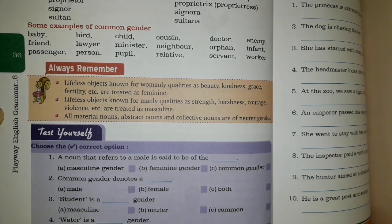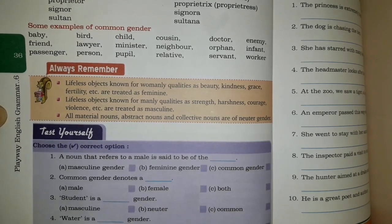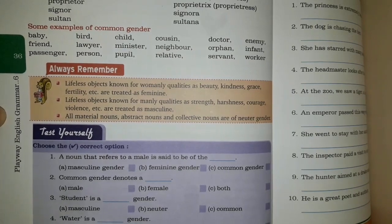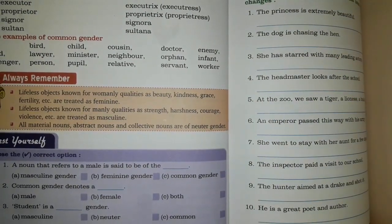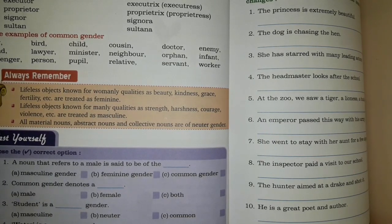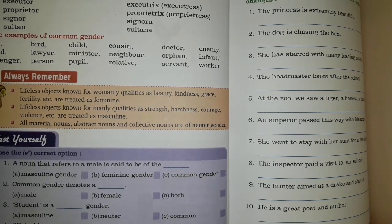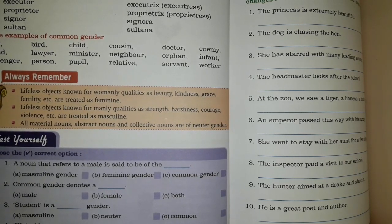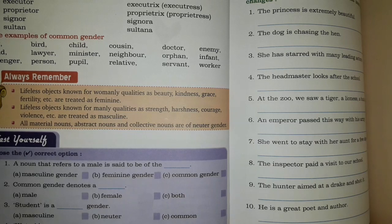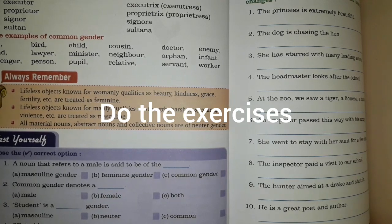Manly qualities like strength, harshness, and courage indicate masculine traits, so we treat them as masculine gender. Third point: all material nouns, abstract nouns, and collective nouns are of neuter gender. So if in any sentence you find an abstract noun or a collective noun — like 'flock', 'team', 'fleet', 'bouquet', 'bunch' — these will be categorized into neuter gender. Now you have to do the exercise given in the chapter.